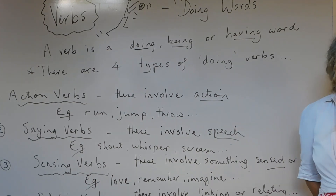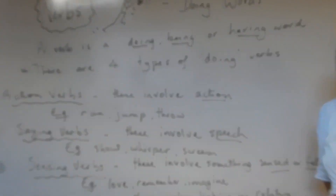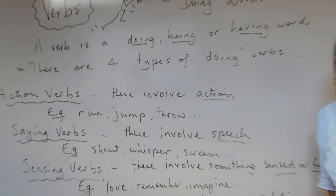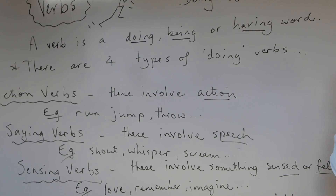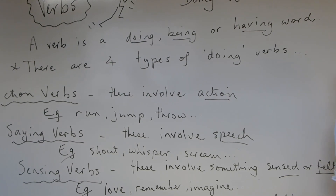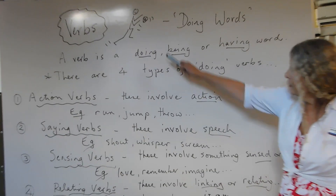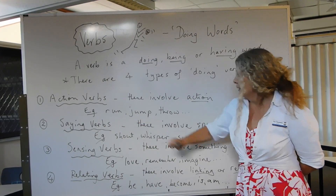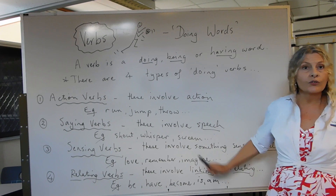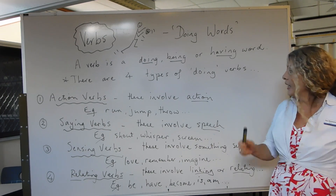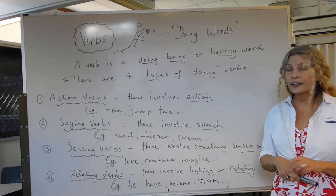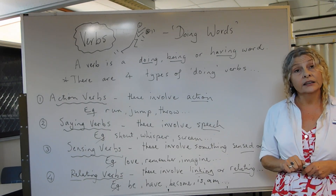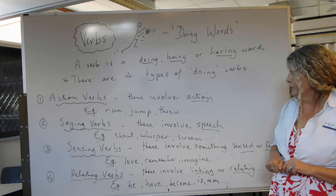The first type of doing words that we probably all recognise very easily are action words. These involve action: bouncing, running, jumping, throwing. These are the words I think we all easily recognise in a sentence as verbs.